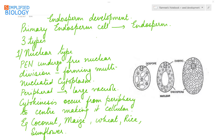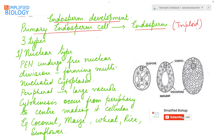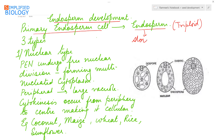The first step for seed development is formation of endosperm. The primary endosperm cell divides to form the endosperm. Endosperm in angiosperms is triploid as it is formed due to triple fusion. It has stored food for the developing embryo. There are three types of endosperm development.